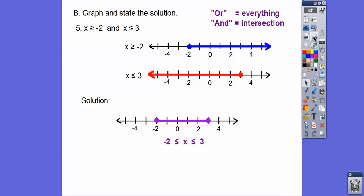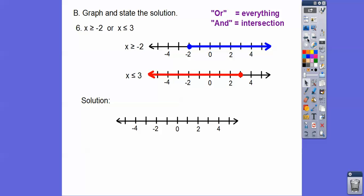One more easy one. This is an OR statement. Graphing from negative 2 going left and from positive 3 going right — OR means everything, so the whole number line is being shaded between the two. The solution is all real numbers.